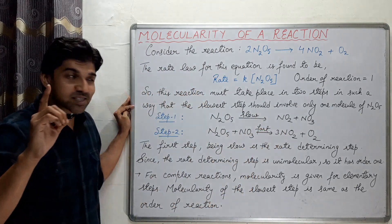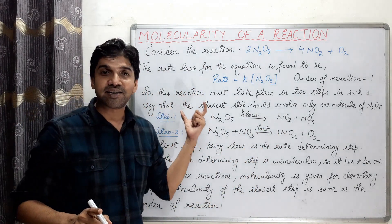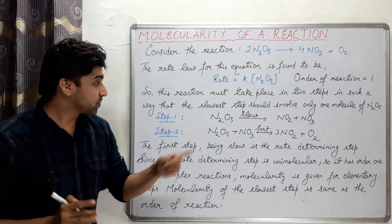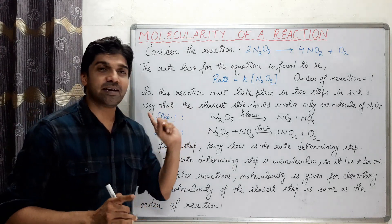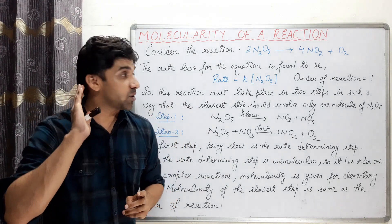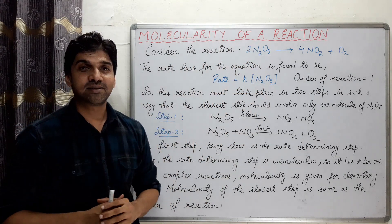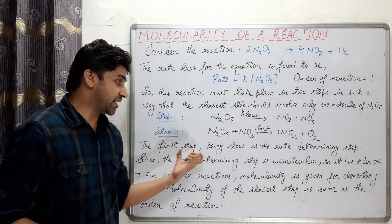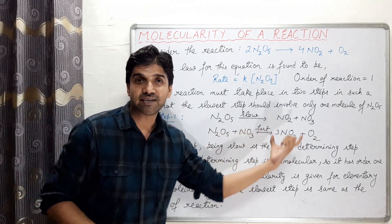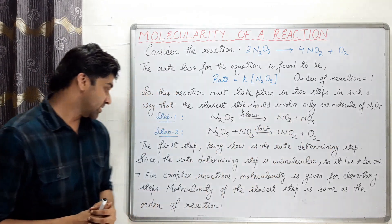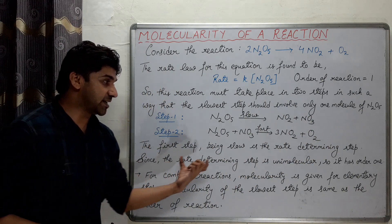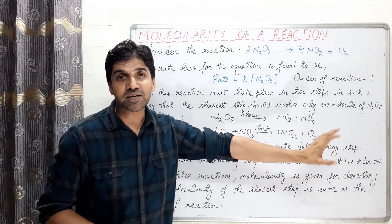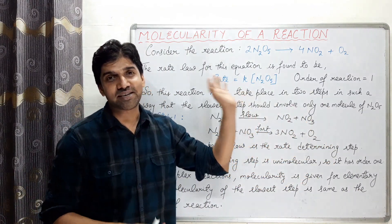The slow step is the rate-determining step. In the slow step there is only 1 reactant, so the order is 1. The first step being slow is the rate-determining step. Since the rate-determining step is unimolecular, the reaction has order 1 — it is a first order reaction.